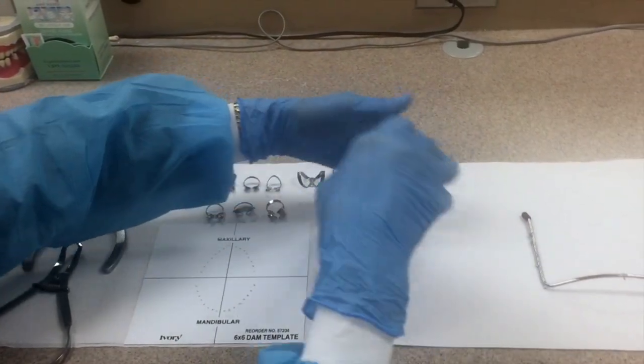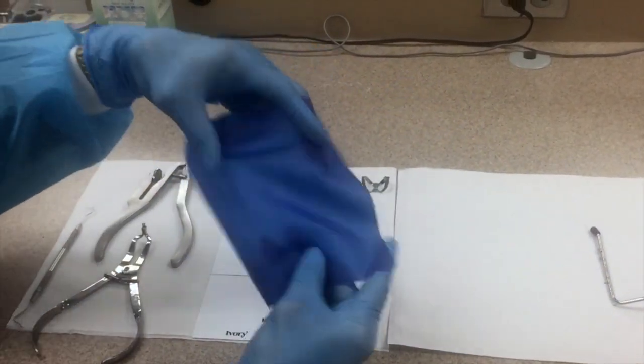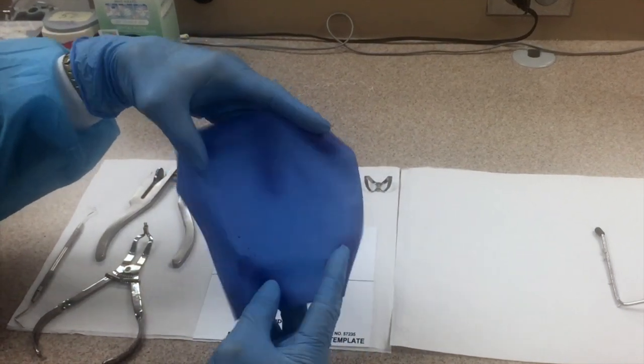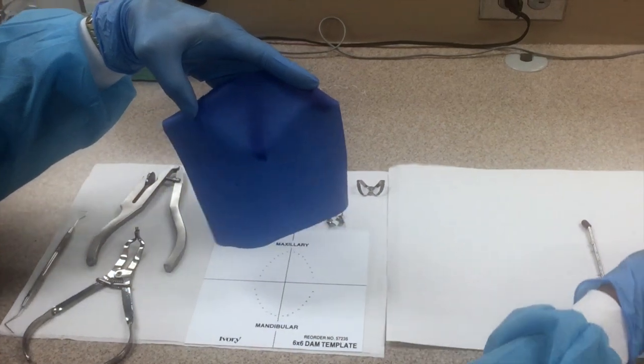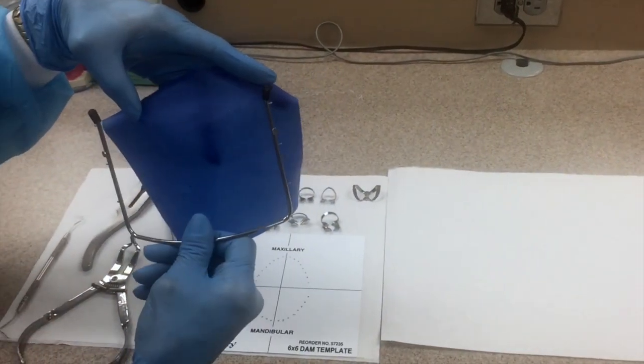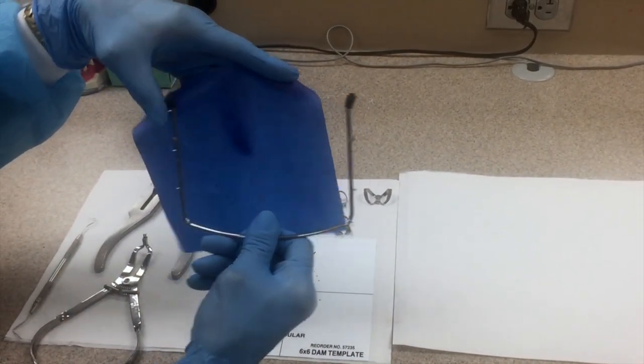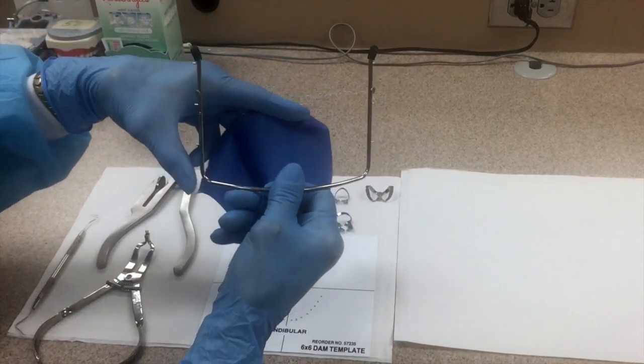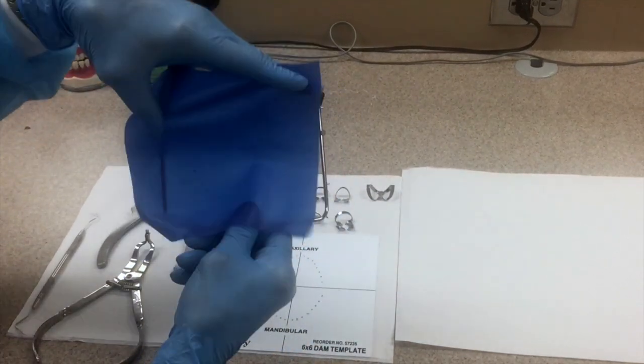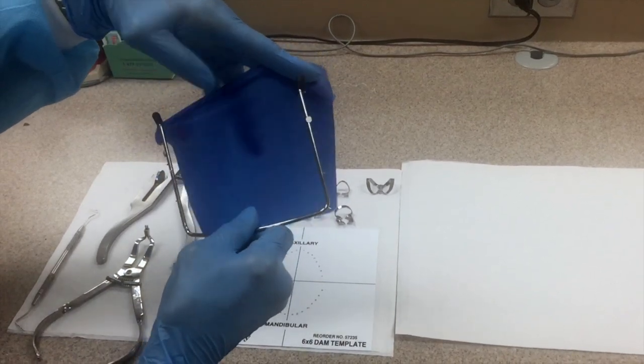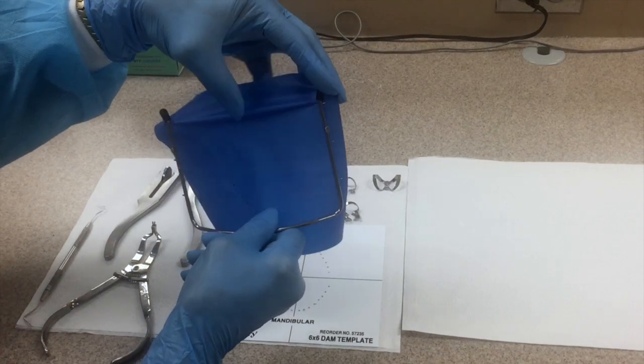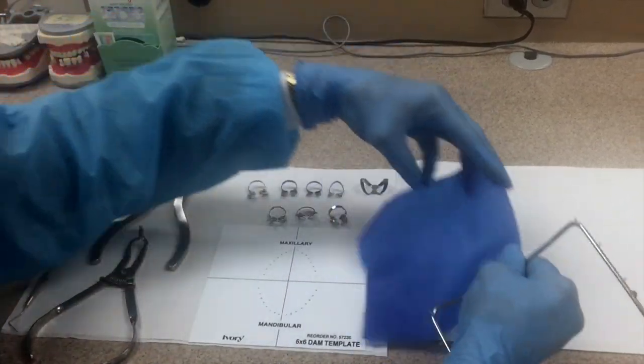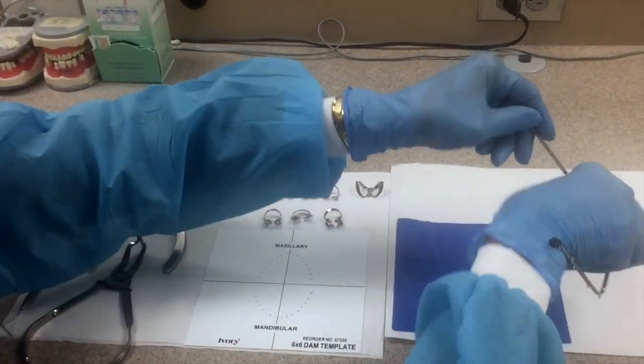This is our rubber dam and it is pretty floppy. In order for this rubber dam to not flop around the patient's mouth, we attach it to a frame. The frame, as you can see, has prongs on it. We attach these prongs to the rubber dam and that will stabilize our rubber dam on the patient's mouth.